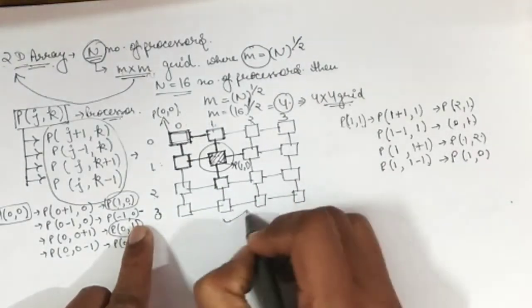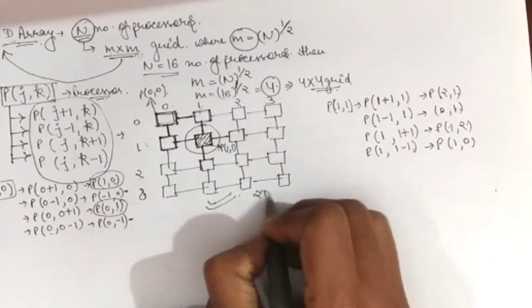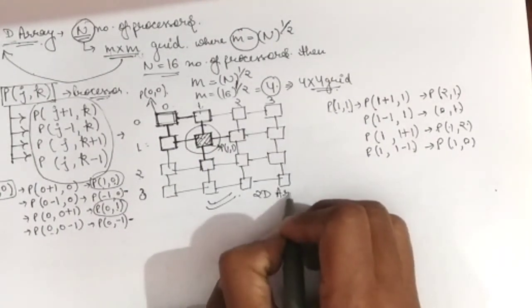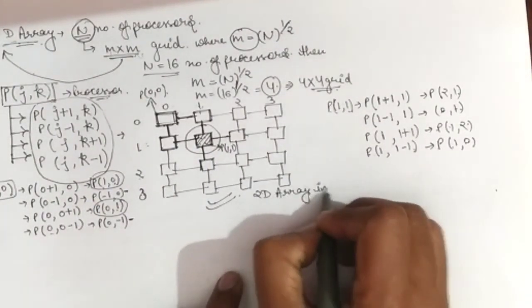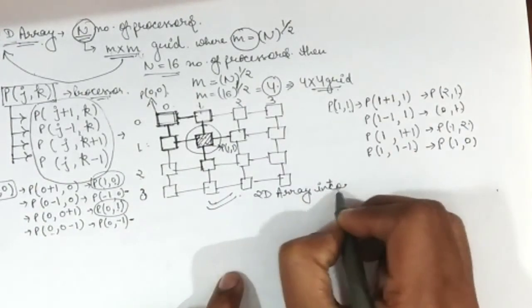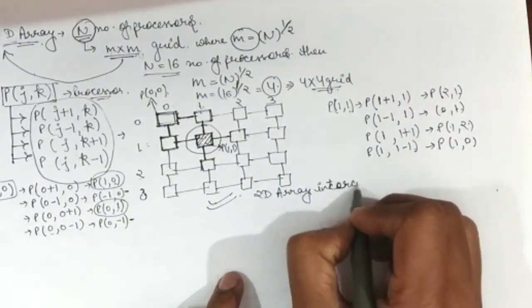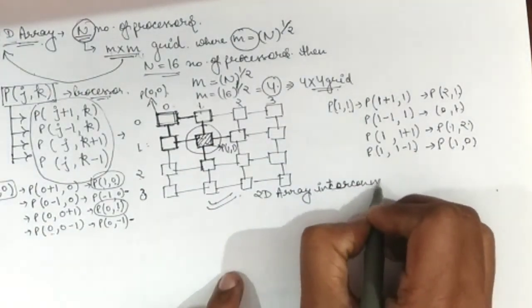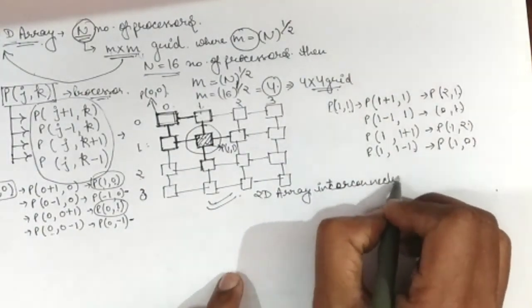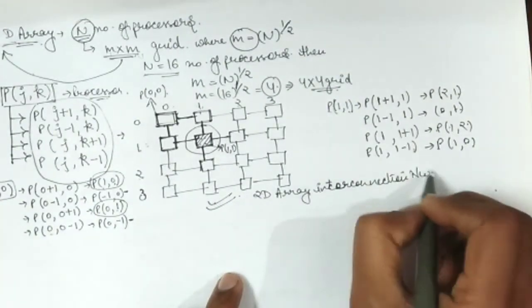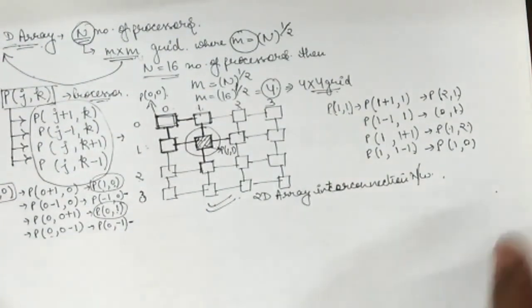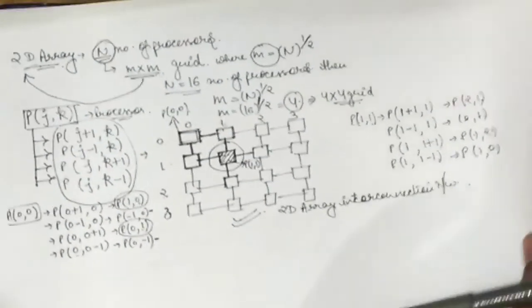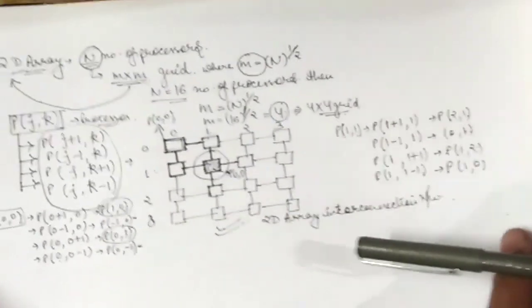This completes the 2D array interconnection network. The next topology to discuss is the perfect shuffle network.